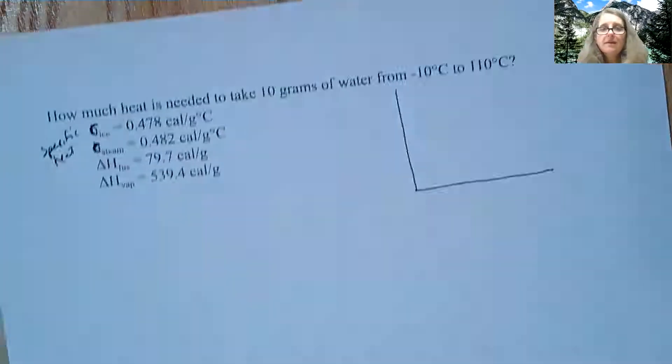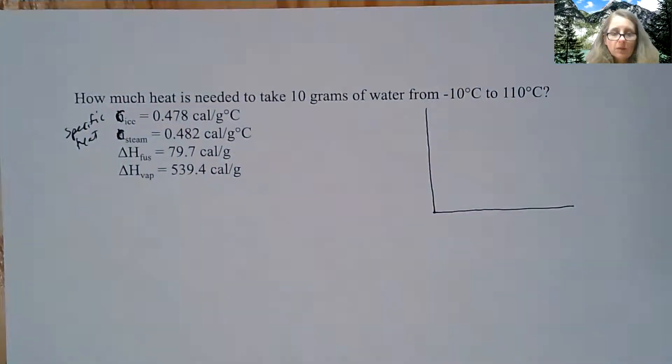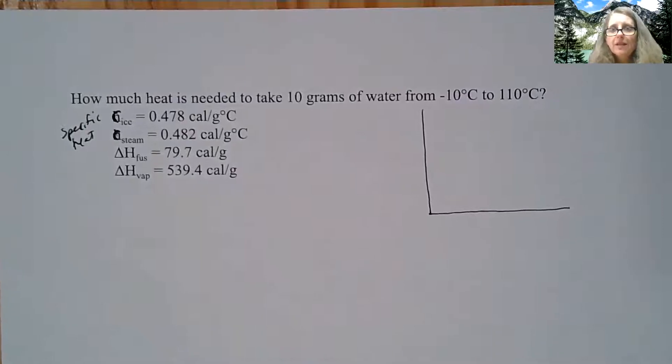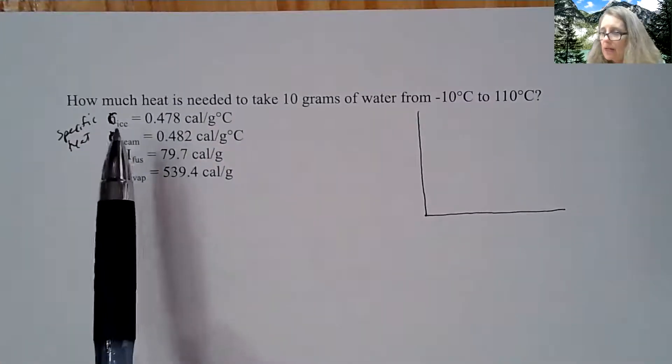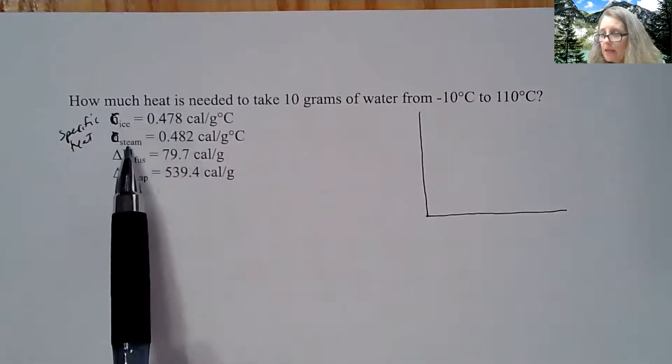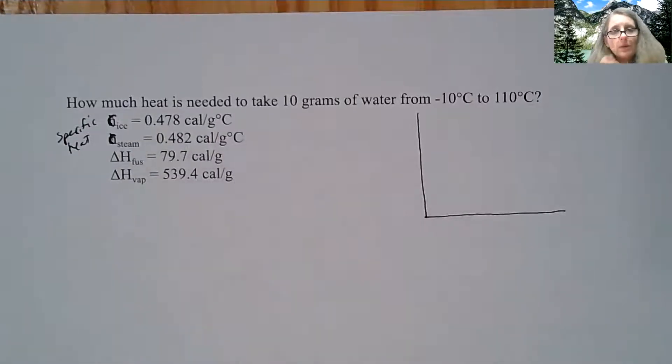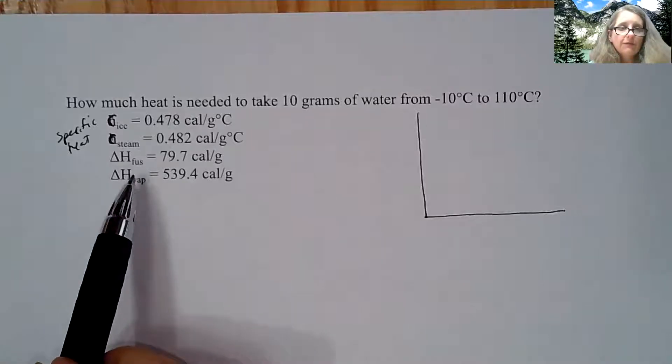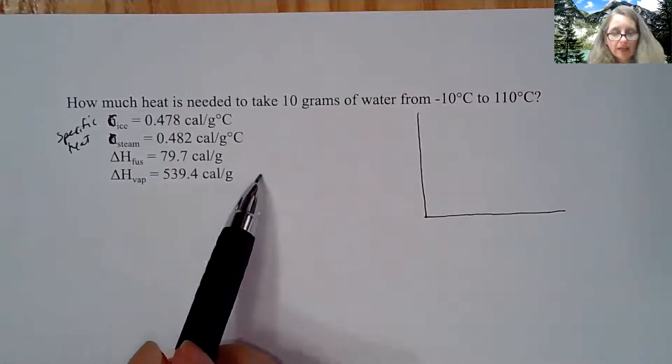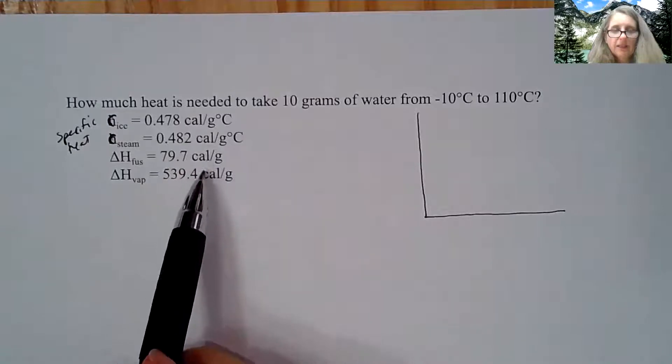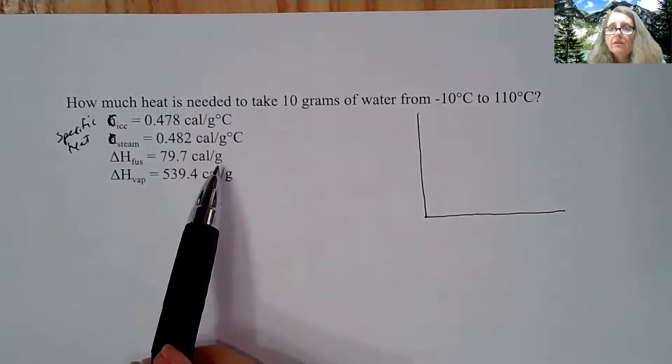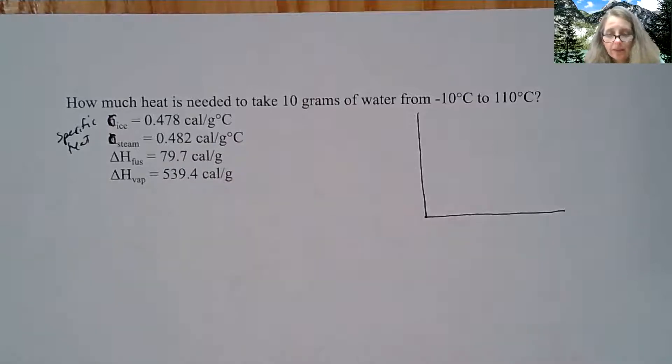So let's look at some calculations with this. And usually these are pretty straightforward. You just need to see me work a couple of them. So how much heat is needed to take 10 grams of water from negative 10 degrees Celsius to 110? And so I have a specific heat of ice and steam. You should know 4.18 for, excuse me, these are in calories. My mistake. Heat of fusion, heat of vaporization, also in calories. And I kept it simple. I did it in grams. Typically you see delta H in moles, but this is just to speed up the process a little bit.